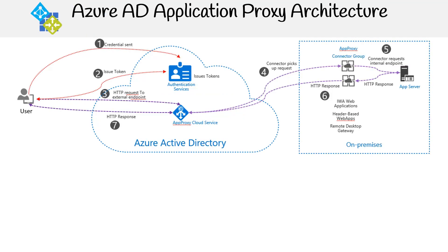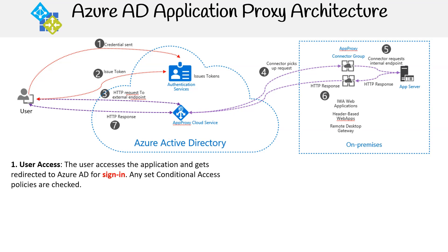Next, let's look at the Azure AD Application Proxy architecture. Here's an image of the process and we'll go through each step. Step one is user access: the user accesses the application and gets redirected to Azure AD for sign-in. Any set conditional access policies are checked.